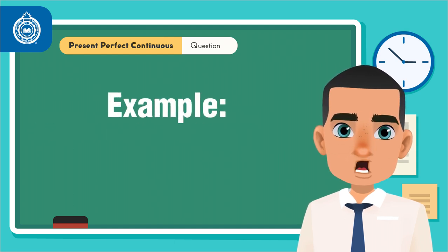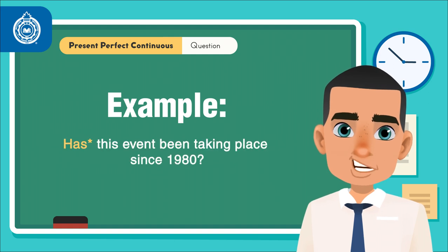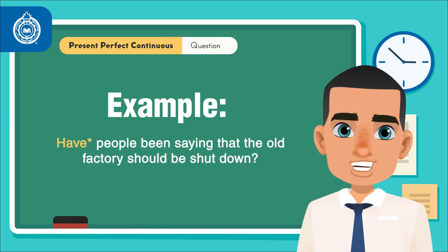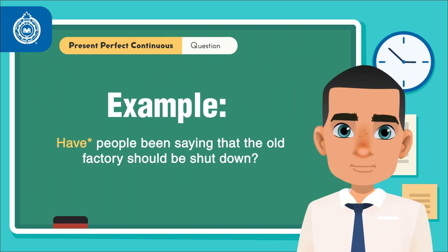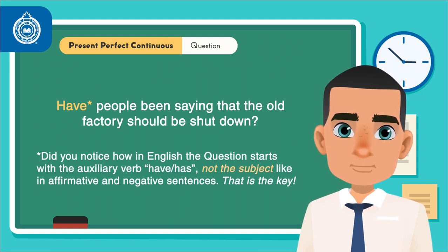Here are some examples. Has Tom been trying to contact him since he heard she was back in the country? Has this event been taking place since 1980? Have people been saying that the old factory should be shut down? Did you notice how in English the question starts with the auxiliary verb have or has, not the subject like in affirmative and negative sentences?